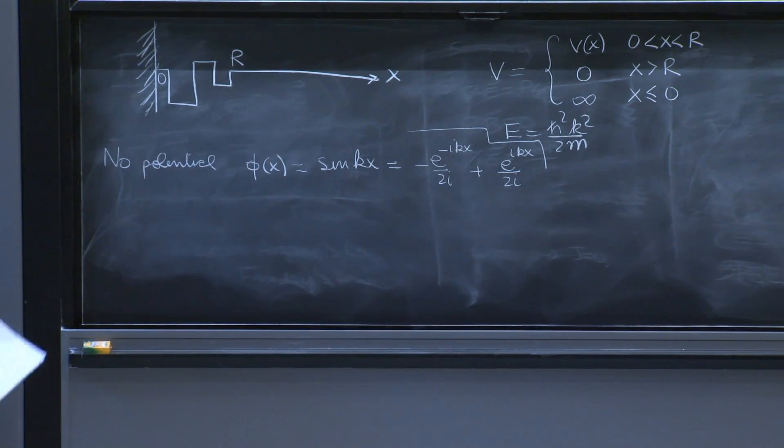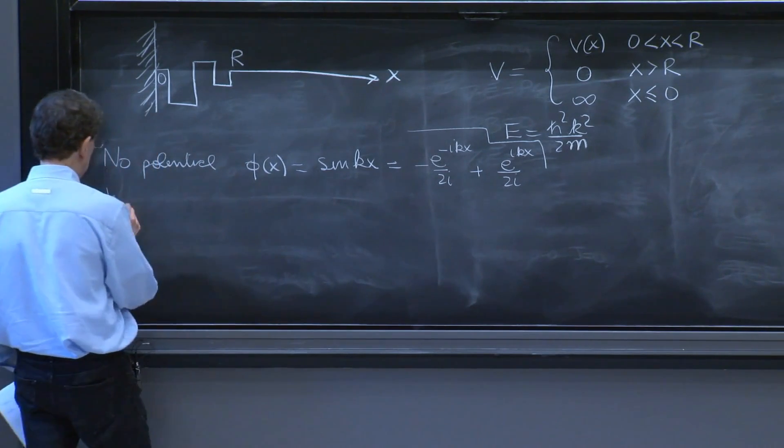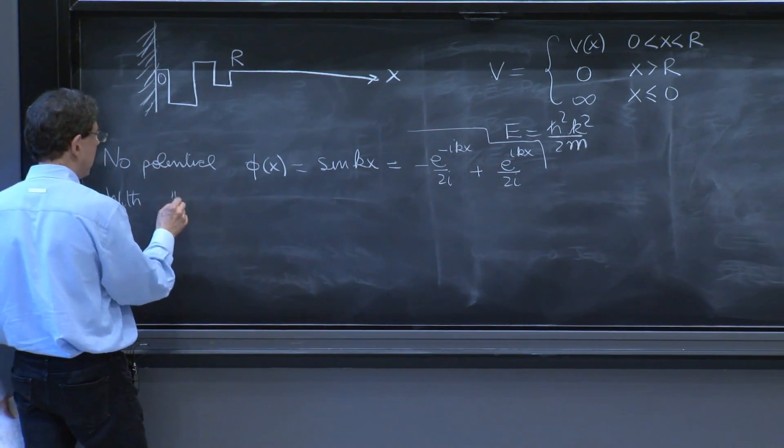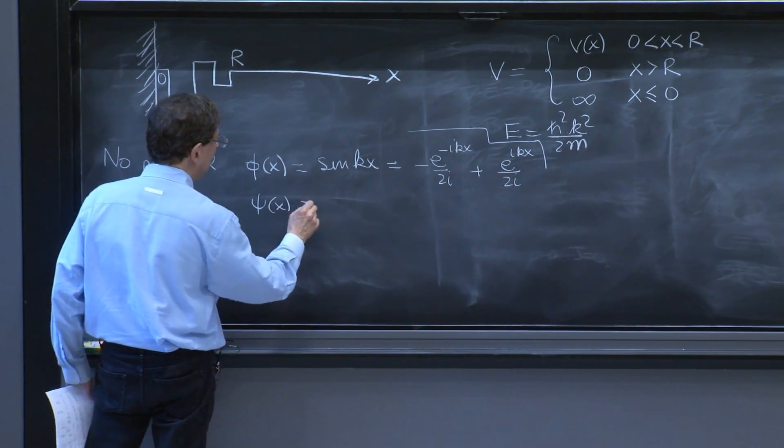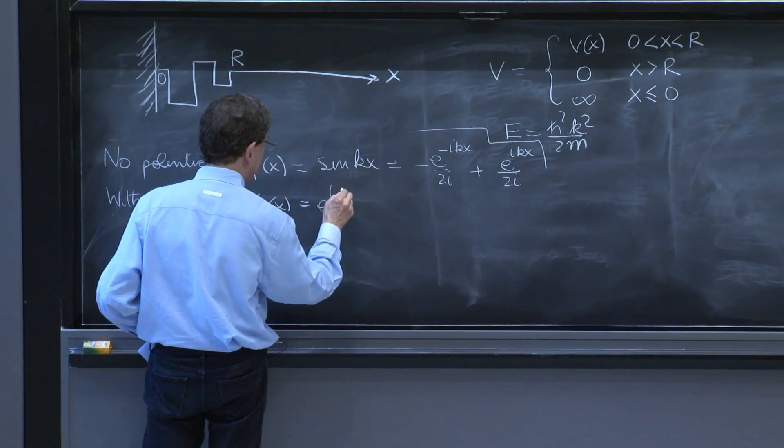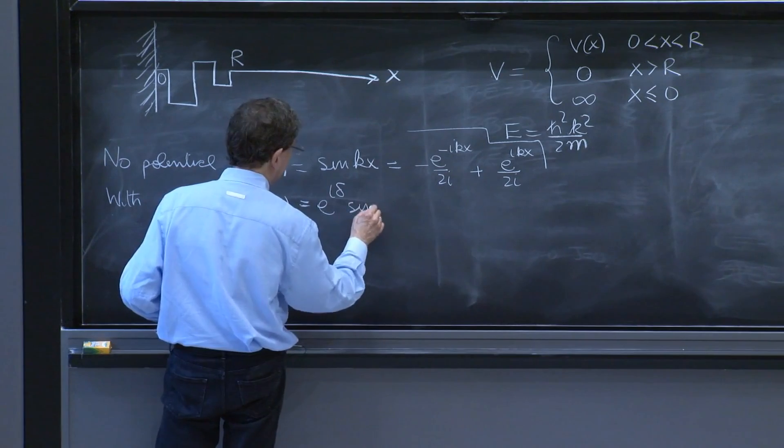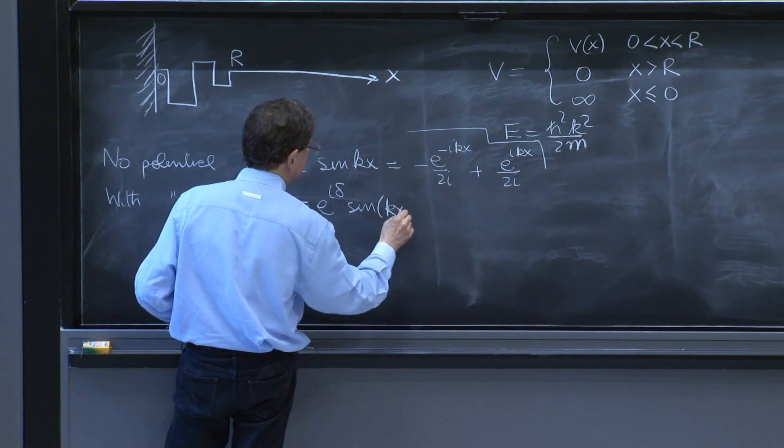Then we said that there would be, in general, with a potential, you would have a solution psi of x, which we wrote after some tinkering in the form i delta sine of kx plus delta.